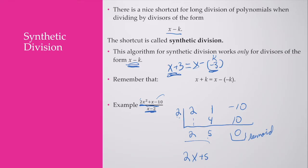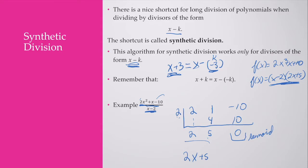I can rewrite this as: if I originally had f of x equals 2x squared plus x minus 10, I now know this factors to x minus 2 times 2x plus 5. I could then use this to find the zeros, because I found perfect factors. Setting each factor equal to 0: x minus 2 equals 0 gives x equals 2; 2x plus 5 equals 0 gives x equals negative 5 halves. These are our two zeros — where our graph crosses the x-axis.